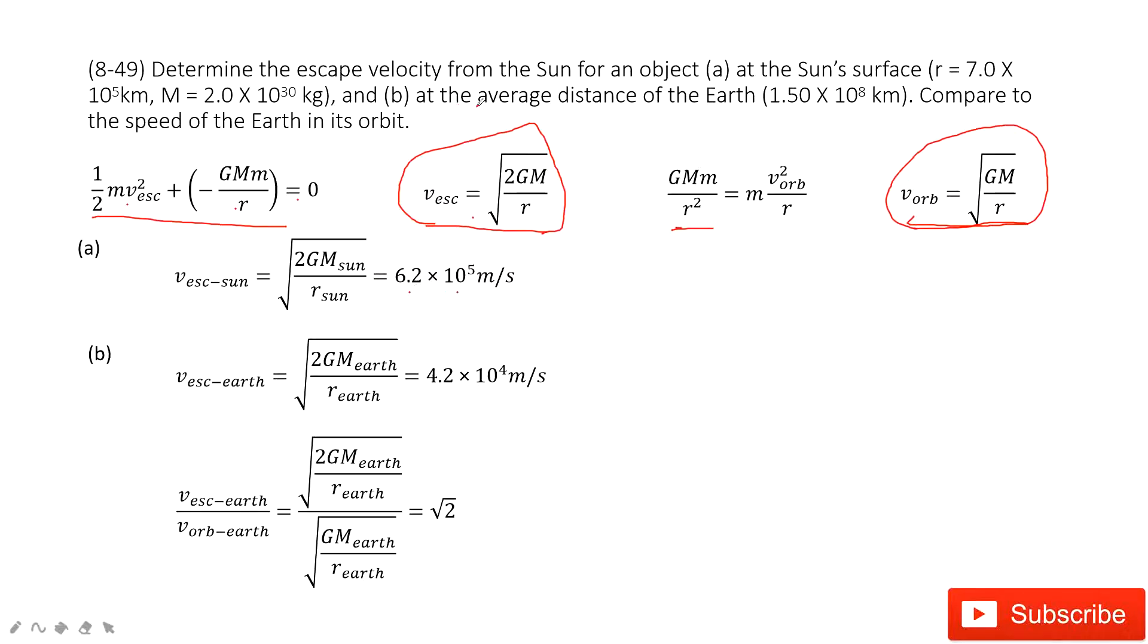The second part tells you the average distance for the Earth and asks you to compare it to the speed of the Earth for its circular motion. So how can you do that? First, the escape velocity for the Earth, this is what we just did. If the Earth is at the center, the escape velocity for the Earth is this one.